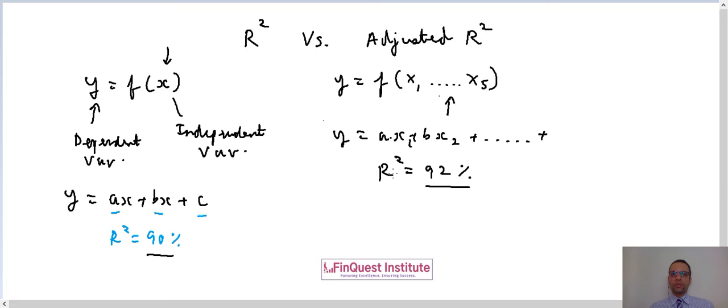It will allow this adjusted R square measure to be adjusted only by that quantum which is explained by any kind of additional value which any of these five variables are adding.